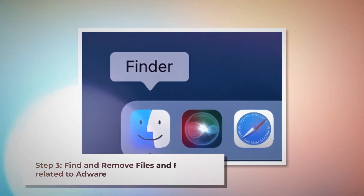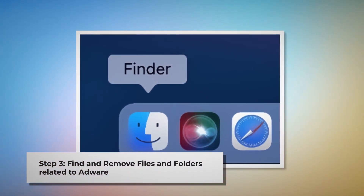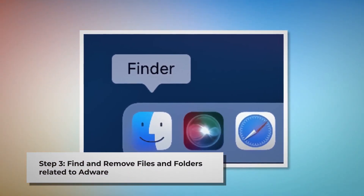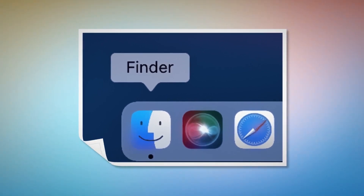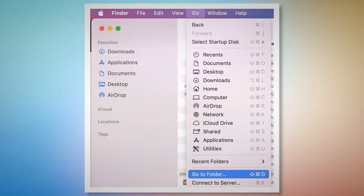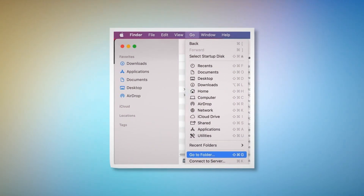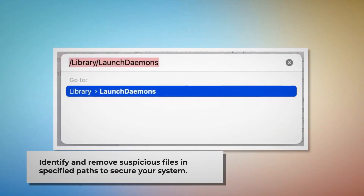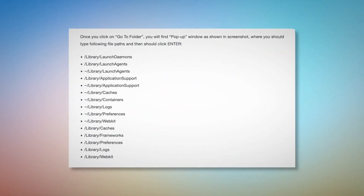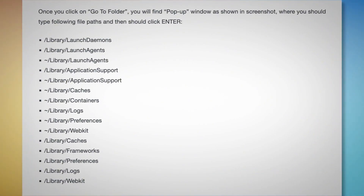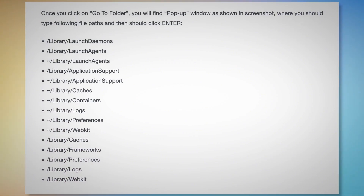Step 3: Find and Remove Files and Folders Related to Adware. Firstly, make sure you are in the Finder folder. Once you are in the Finder folder, click on Go at the top menu bar of your Mac and then Go to Folder on the drop-down menu, as shown in the screenshot. Once you click on Go to Folder, a pop-up window will appear where you should type these file paths and click Enter. Once you enter paths such as Library, LaunchDaemons, LaunchAgents, Application Support, and so on, as shown here, you should look for suspicious or malicious files and move them to trash. A few examples of such malicious files are as shown here. Note: adware usually puts many files with the same string.